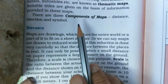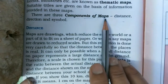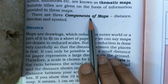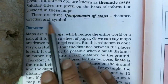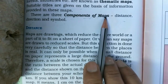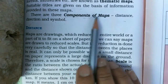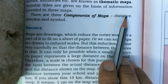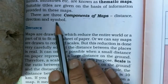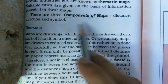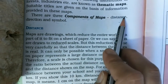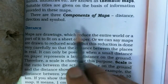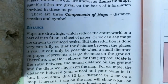Now we will understand the components of maps. Components of maps means maps के मुख्य अंग — वो कौन-कौन से होते हैं। There are three components of maps: distance, direction, and symbol. Distance means दूरी, direction means दिशा, and symbol means प्रतीक। किसी भी map में ये तीनों components जरूरी होते हैं — इन तीनों चीज़ों से मिलकर ही हमारा map बना होता है।